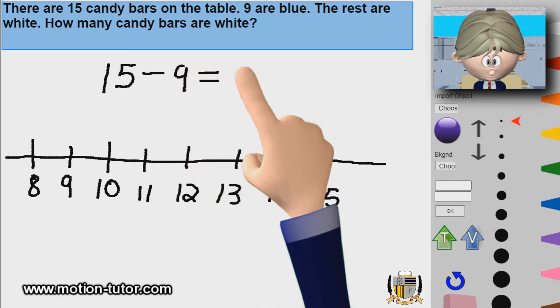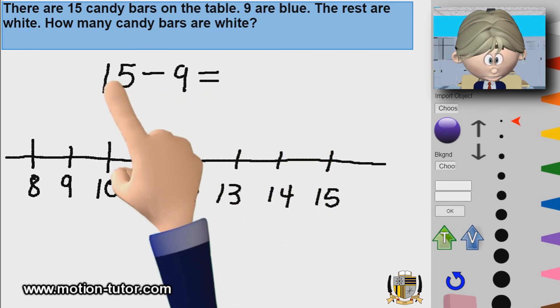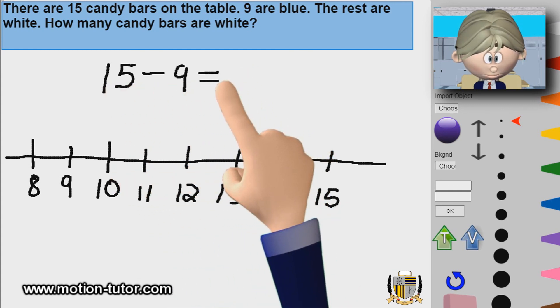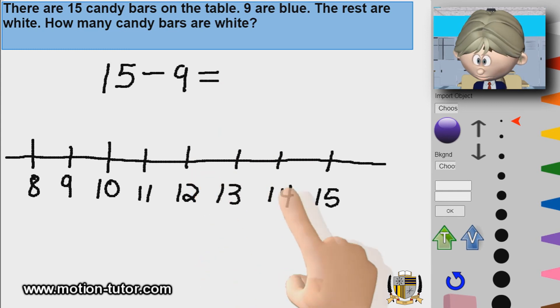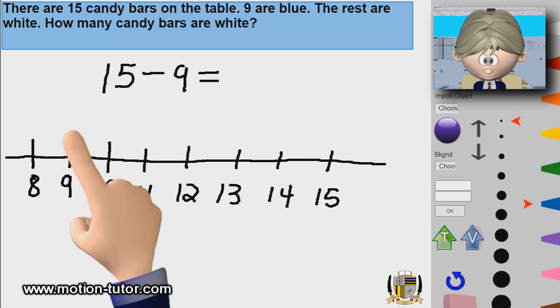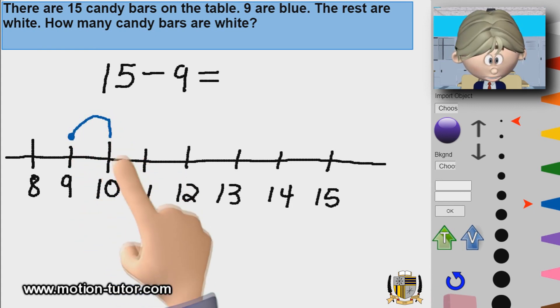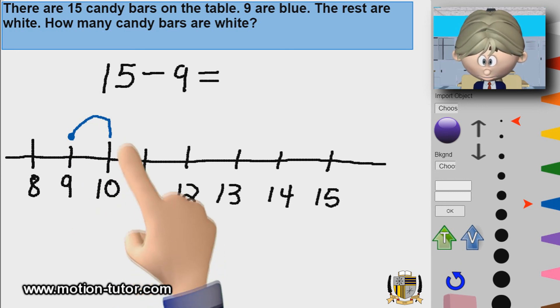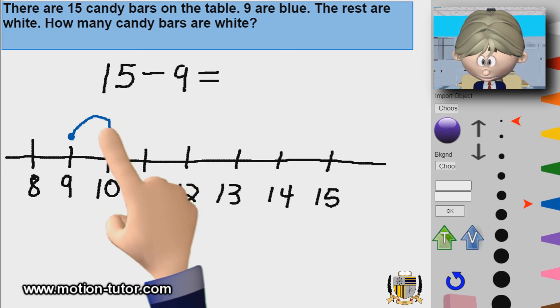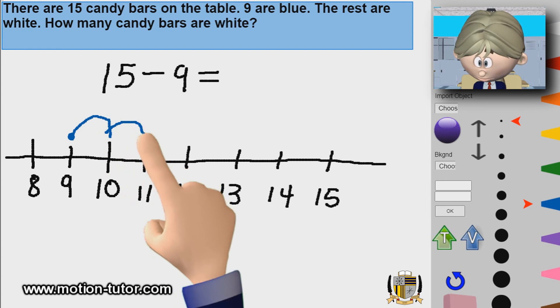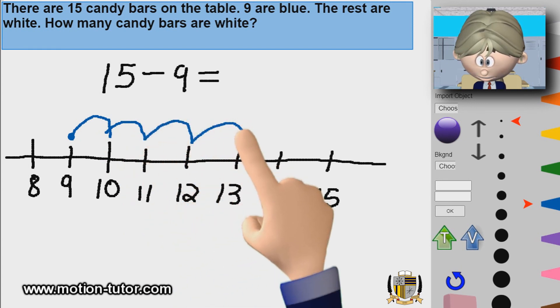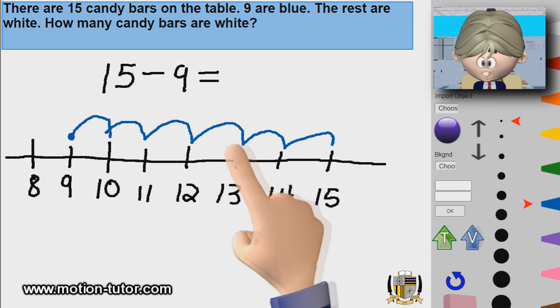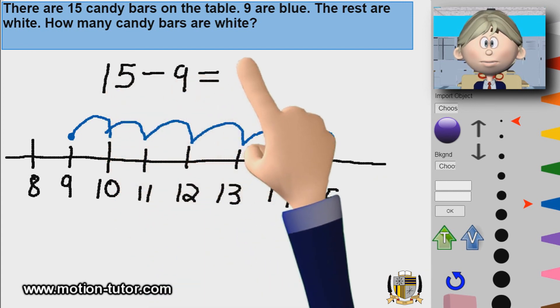So basically I have a 15 minus 9. So 15 minus 9. I can think about this and I say okay, I can go from 9 to 15. I know I need one more to get to 10. So that's a 1 and I'm at 10. And then I know I need 5 more to get to 15. So that 1 and 5 together is 6. So 15 minus 9 is 6.